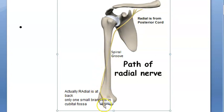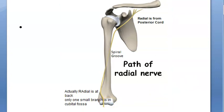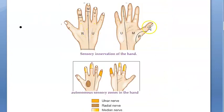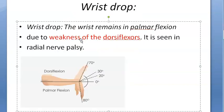The radial nerve also supplies the hand. On the right hand, the part of the thumb and the back of the right hand are supplied by the radial nerve. So imagine if there is radial nerve palsy — what will happen?